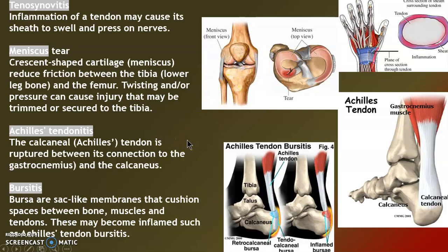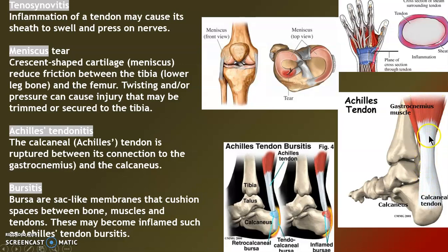There goes the meniscus. Achilles tendonitis — the newer name is calcaneal tendon, because Achilles is from mythology. Calcaneal is a better name since there's the calcaneus and the gastrocnemius, the calf muscle. This tendon can get ruptured, and if it becomes chronic, the tissue starts to get pits in it, loses elasticity, and you can't reverse that.